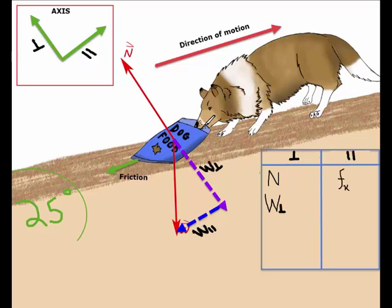For the parallel direction, we have friction. Notice it has a little k in front, indicating that the bag is in motion. We also have the parallel component of weight.